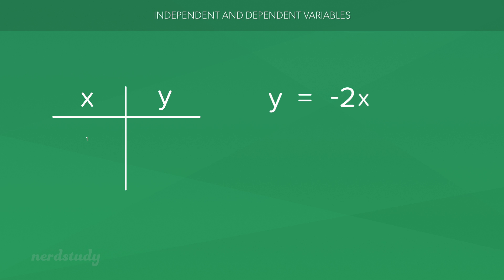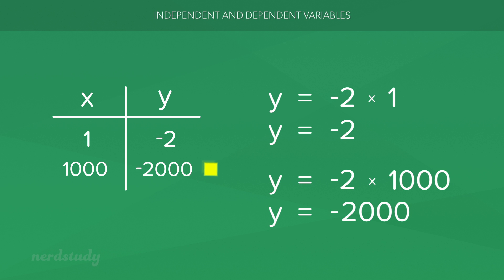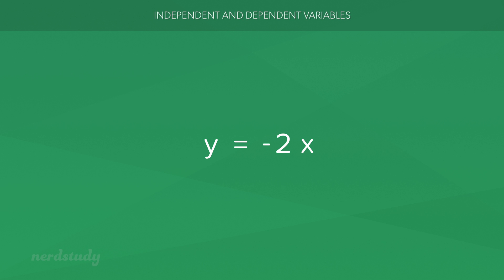If x was 1, then y is negative 2. But if x became much bigger than 1, let's say 1,000, then y is now negative 2,000. And remember, negative 2,000 is a lot smaller than negative 2. So this equation would be an example of a situation where when our independent variable goes up, our dependent variable goes down.